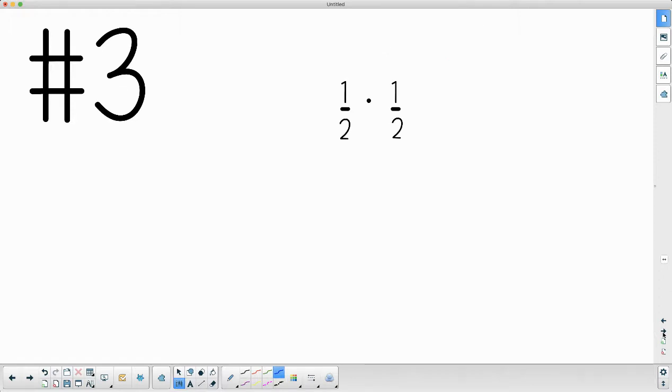Number three asks us to solve, and our answer needs to be in simplest form. So we are multiplying these. Remember, when we multiply fractions, we multiply our numerators, we multiply our denominators, and then we check for any simplifying that we can do. We can also cross-simplify ahead of time, but there's nothing that can go into 1 and 2 going either direction.